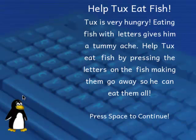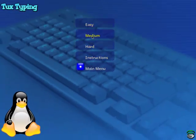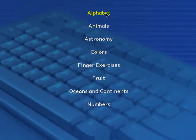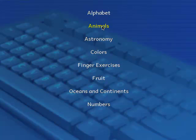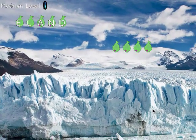So let's press the space bar here to continue, and it's asking what level do we want to use. Let's start at medium, and now it's asking what kind of word list we want to use. Animals would have lists of animals that we can type, such as horse, bear. Astronomy has lists of terminology for astronomy, such as moon, sun, stars. You can see that as I type the letters, they go off of the fish. So this is kind of a fun game for the kids to play.